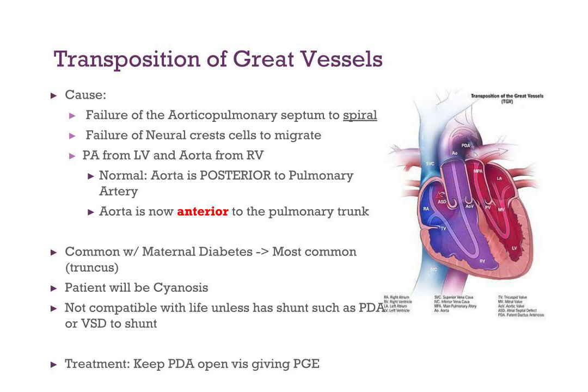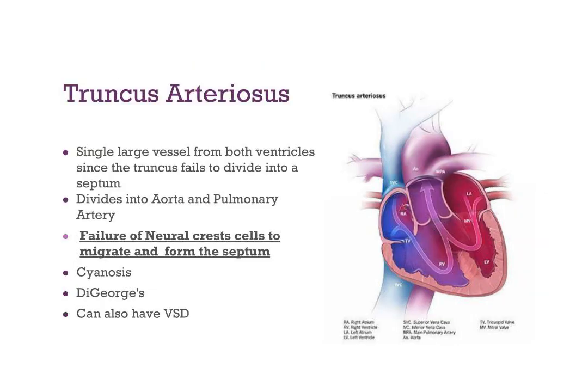Transposition of the Great Vessels is commonly seen when born to a diabetic mother — maternal diabetes is a risk factor. The child will be cyanotic, and this is not compatible with life unless the PDA is open and there's adequate shunting. To keep the PDA open, we give prostaglandins.